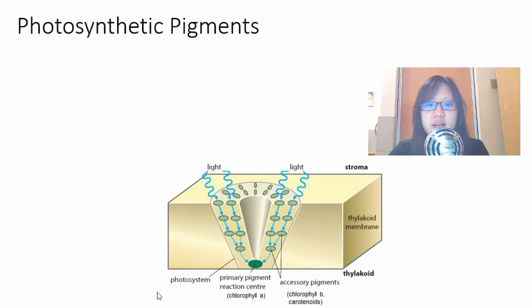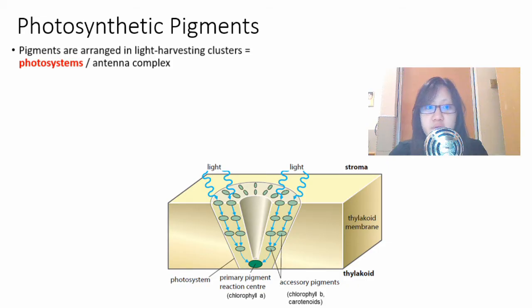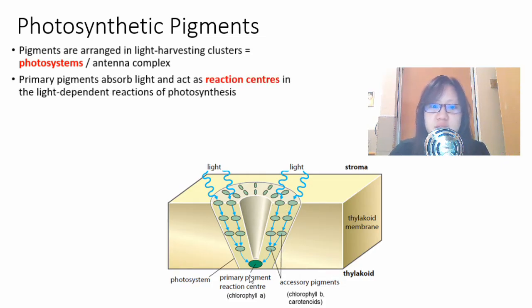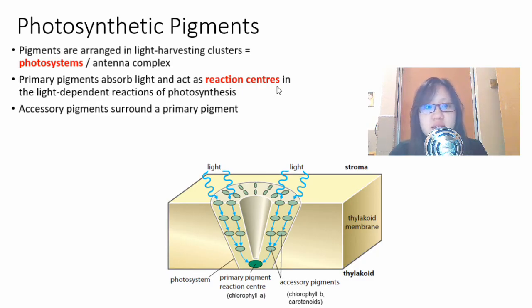Chlorophyll B, beta-carotene, and xanthophyll are called accessory pigments. What's so special about the primary pigment? It is at the center of the photosystem. Pigments are arranged in light harvesting clusters or what we call photosystems or some people call it the antenna complex. It looks a little bit like a satellite dish to me.